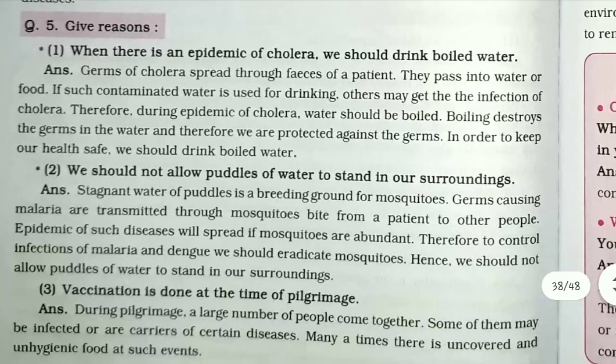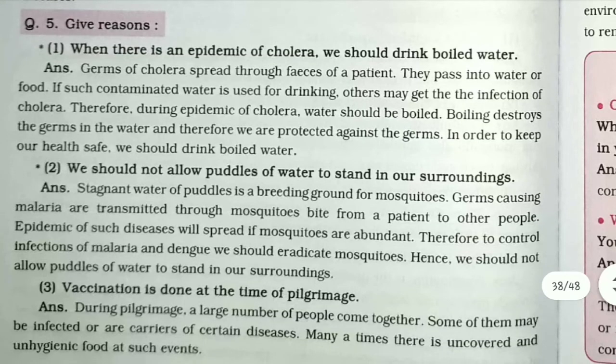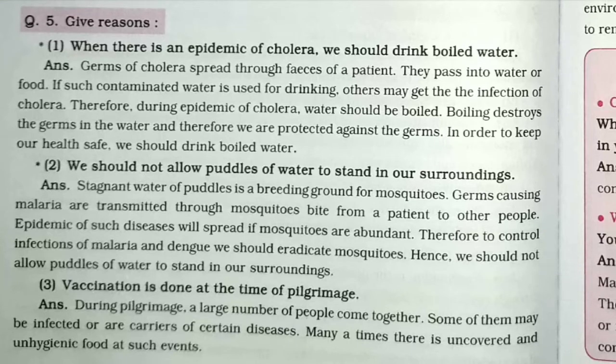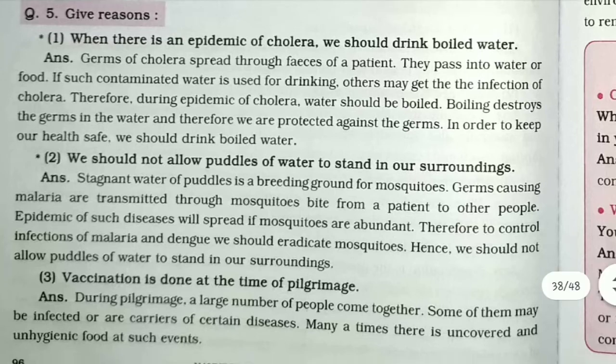Give reasons: When there is an epidemic of cholera, we should drink boiled water. The germs of cholera spread through the feces of a patient and pass into water or food. If such contaminated water is used for drinking, others may get the infection of cholera. During an epidemic of cholera, water should be boiled, as boiling destroys the germs in the water, and therefore we are protected. In order to keep our health safe, we should drink boiled water.